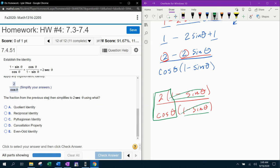And then last step, the fraction from the previous step then simplifies to two secant theta by using which kind of identity? Well, we know that cosine, if it's in the denominator, turns into secant. That is a reciprocal identity.